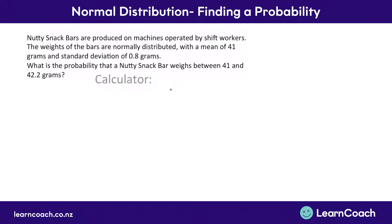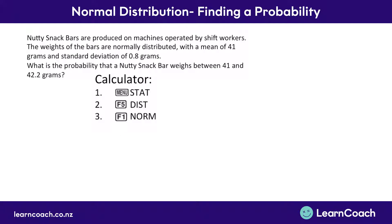To start with on your calculator, go to the main menu, then press STAT. The statistics icon's location will vary depending on what version of a graphics calculator you have. Once you've done that, press DIST up the top, which is button F5. Once you press DIST, press NORM which will come up as F2. These are the three steps you follow in all calculator solving problems: STAT, DIST, NORM.